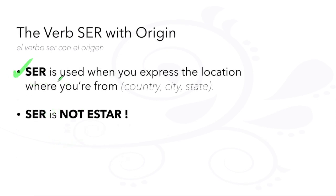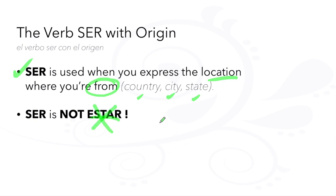Don't forget that the verb ser is used to express the location of where you're from, either country, city, or state. The verb estar also means 'to be,' but is not used in the same way. We team up with the preposition 'de' to talk about where you're from.